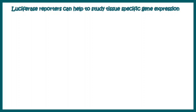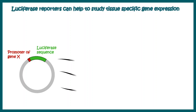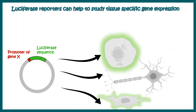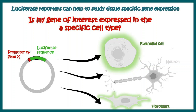Let's say we want to understand whether a particular gene is expressed in a tissue-specific manner or not. We clone our promoter of interest upstream to a luciferase reporter gene and then transfect it into different cell types, and we check the bioluminescence activity. The bioluminescence activity works as a readout which tells us whether the gene is expressed in that particular cell type. In this example, bioluminescence was observed from the epithelial and fibroblast cell but not from the neuronal cell — meaning this gene is epithelial or fibroblast specific and is not expressed in the neuron.